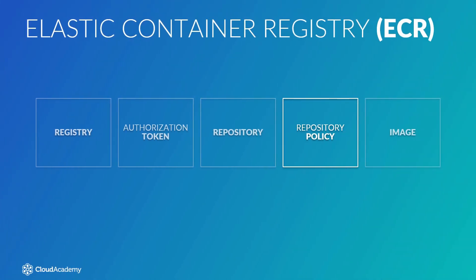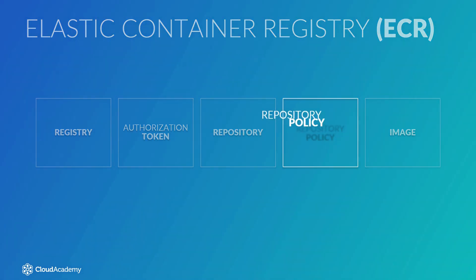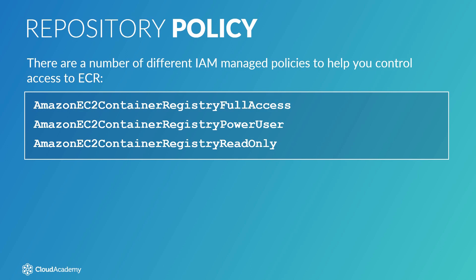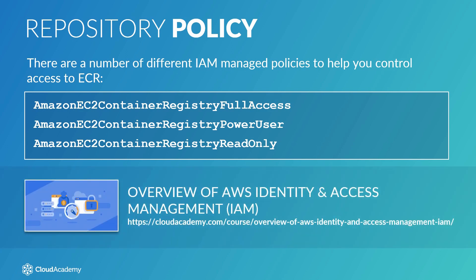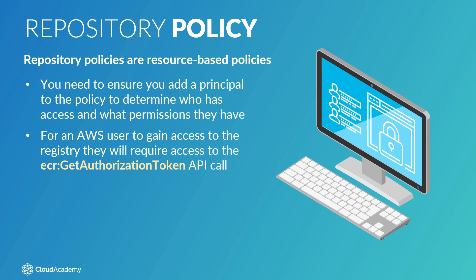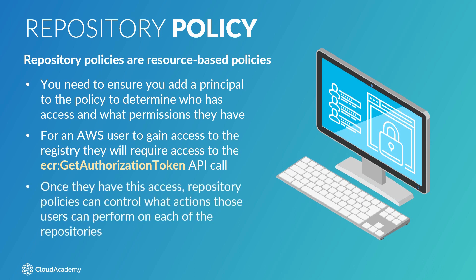You can control access to your repositories and images using both IAM policies and repository policies. There are a number of different IAM managed policies to help you control access to ECR, these being the three shown on screen. Repository policies are resource-based policies, which means you need to ensure you add a principal to the policy to determine who has access and what permissions they have. It's important to be aware that for an AWS user to gain access to the registry, they will require access to the ECR Get Authorization Token API call. Once they have this access, repository policies can control what actions those users can perform on each of the repositories. These resource-based policies are created within ECR itself and within each of the repositories that you have.